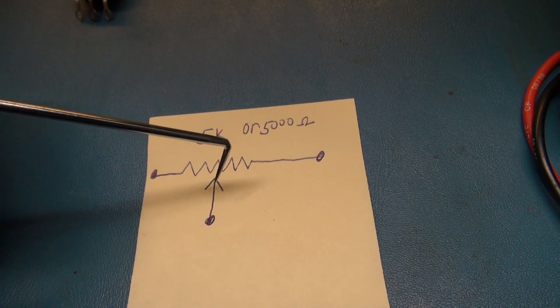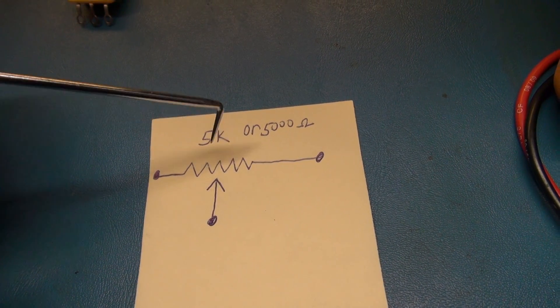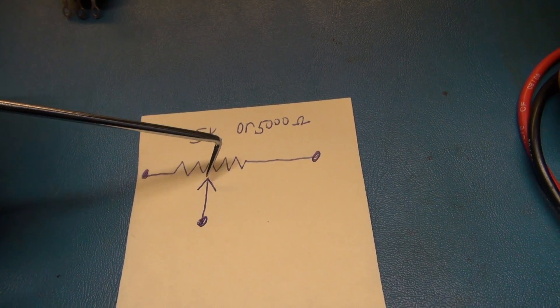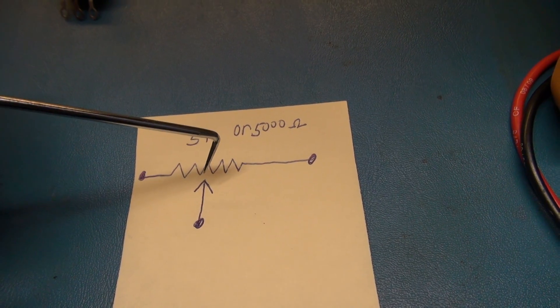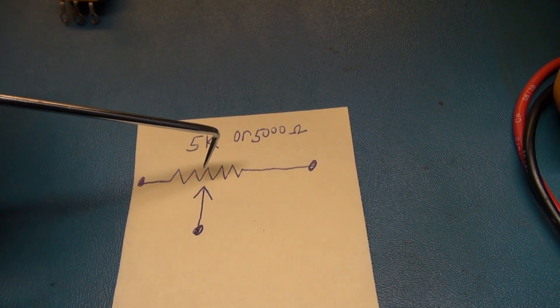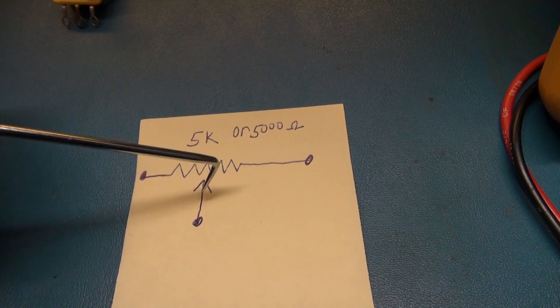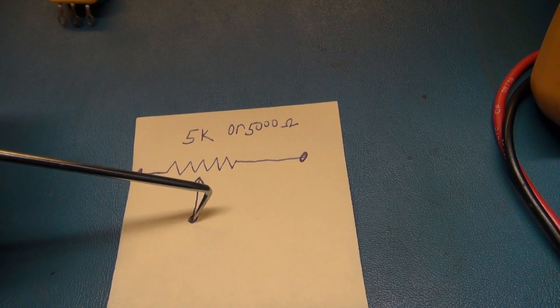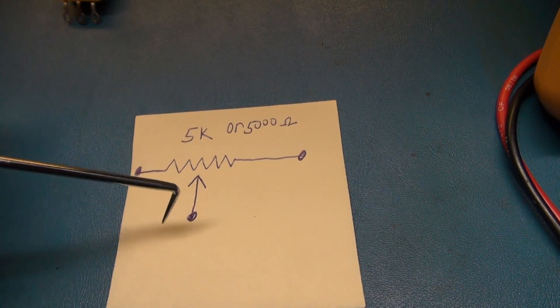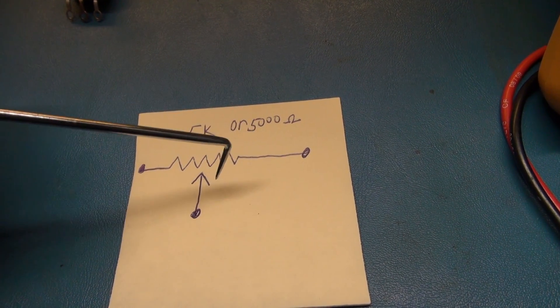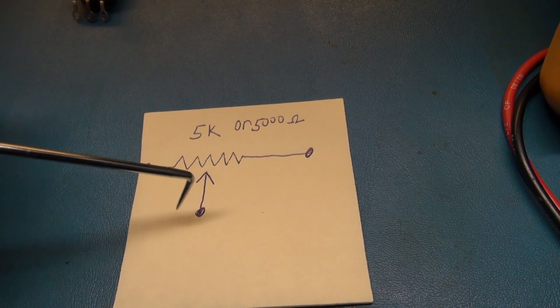Right now I have the wiper in the center of this 5k potentiometer. You should be able to cut this value in half to 2.5k. So if you were to measure from this point to this point on the potentiometer, it would read 2.5k, and from this point to this point, 2.5k.